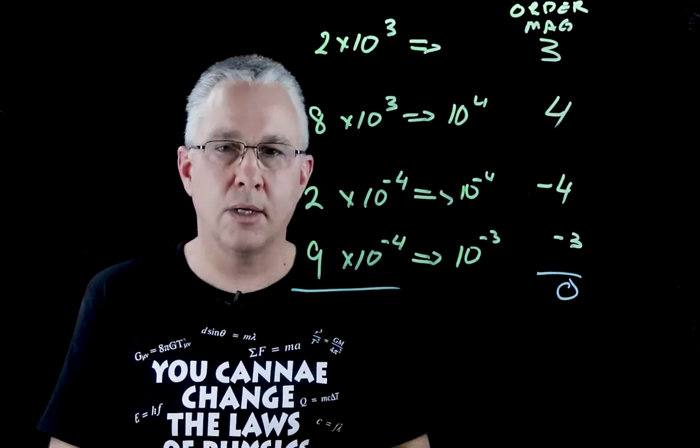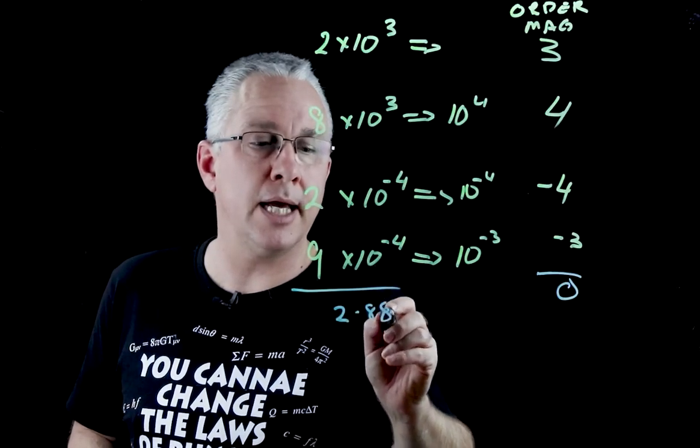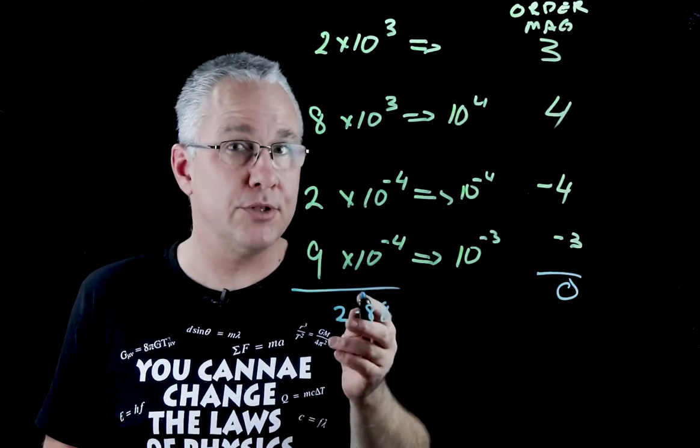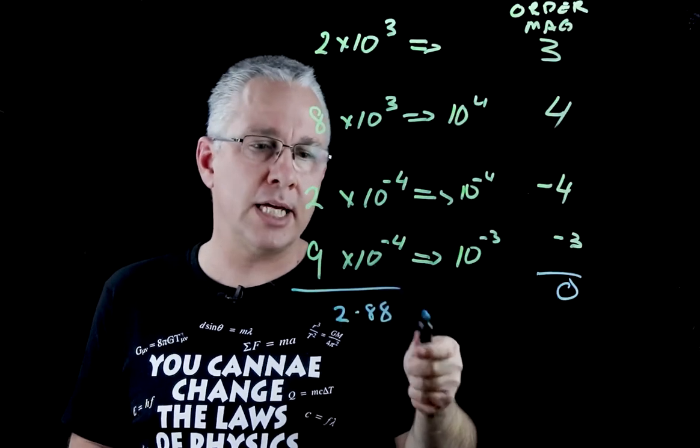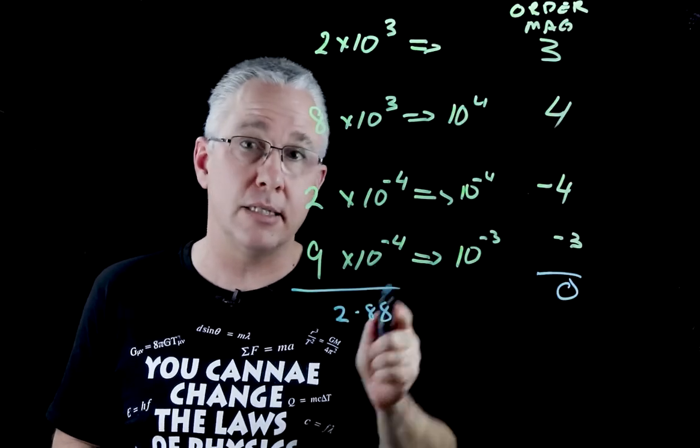So if I calculate that out, I'm going to get 2.88. Now that is closer really to 1, in other words 10 to the power of 0, than it is let's say to the next one which is 10, which is 10 to the power of 1. So the order of magnitude of this is 0.